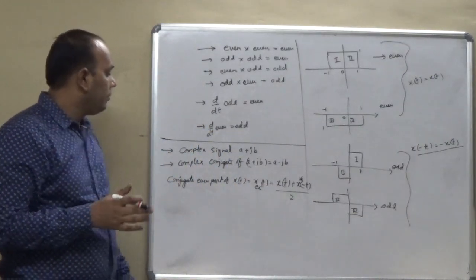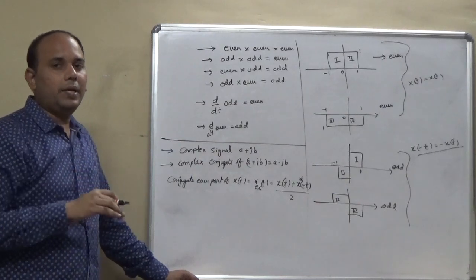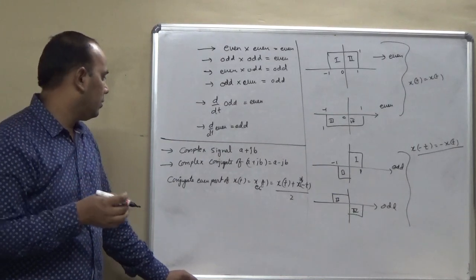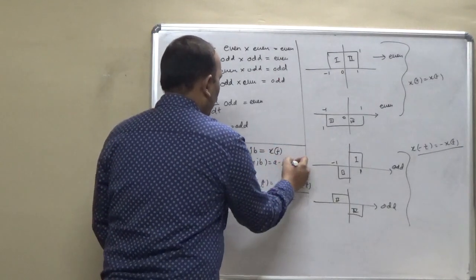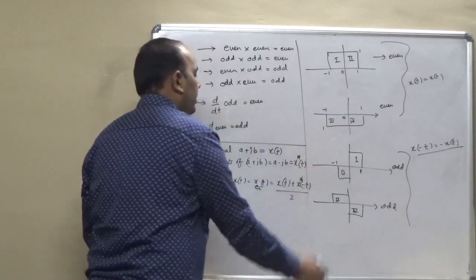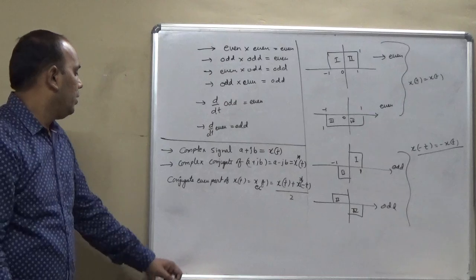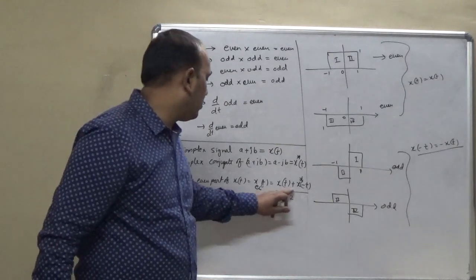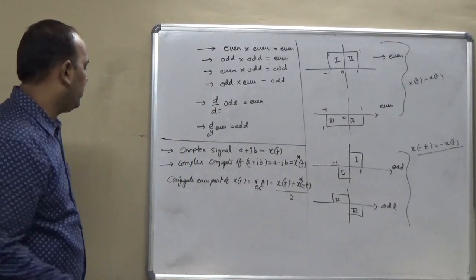That means, x(t) is a complex signal. That is, it is having the two parts. So, just assume this one is the x(t) and it is the complex part. Sorry, conjugate part of x(t). So, conjugate even part of x(t) will be x_ec is equal to x(t) plus x asterisk -t divided by 2.